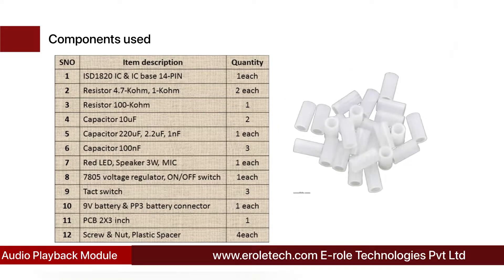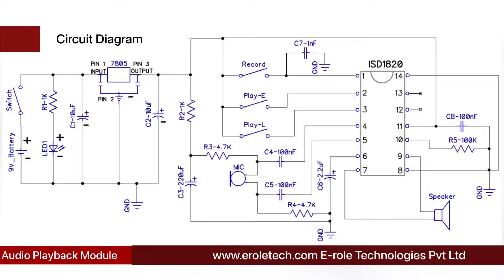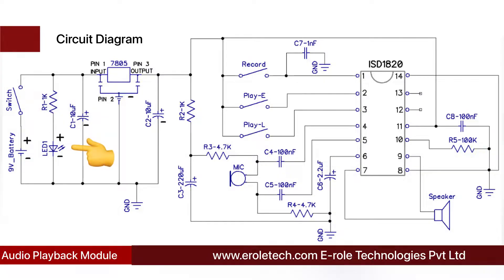Before making the project, we will understand its circuit diagram. This is a 9-volt battery to power up the circuit. This is an on/off switch which is used to start or stop the project. This is a power supply indication LED, and this is a current limiting resistor to protect the LED from high current and voltage.